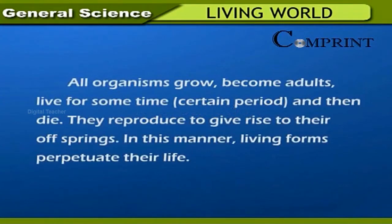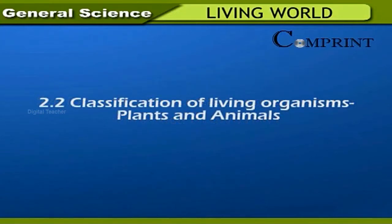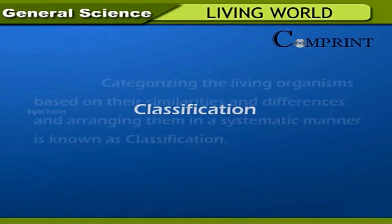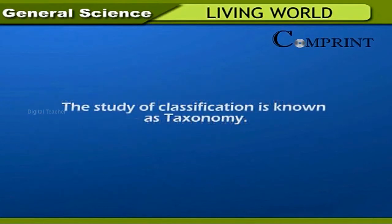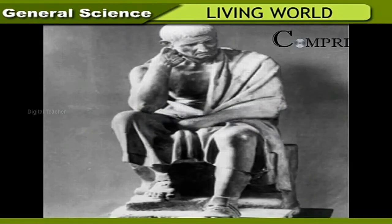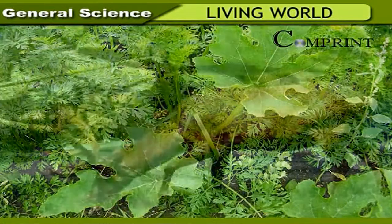All organisms grow, become adults, live for some time, and then die. They reproduce to give rise to their offspring, and in this manner living forms perpetuate life. Classification of living organisms involves categorizing them based on their similarities and differences and arranging them in a systematic manner — this is known as classification. The study of classification is called taxonomy. Aristotle was the first scientist to classify living organisms into two main kingdoms: plants and animals.